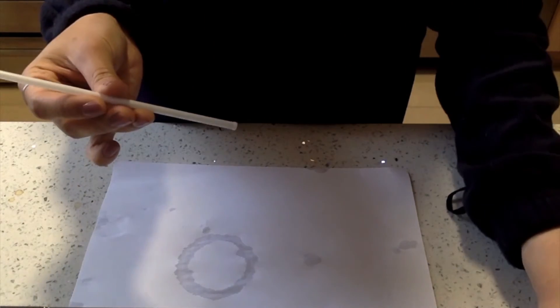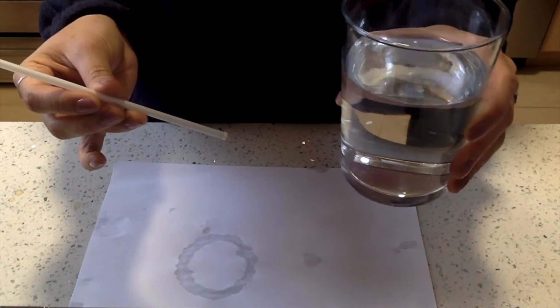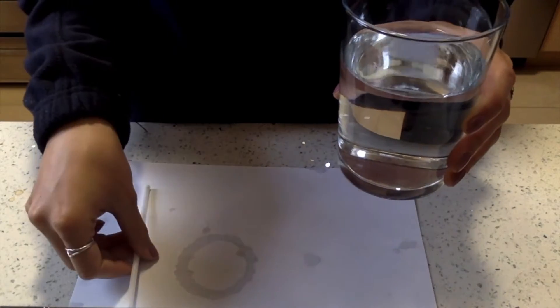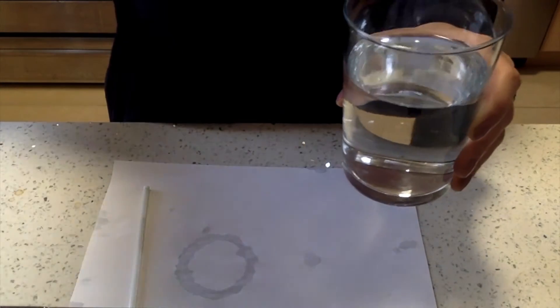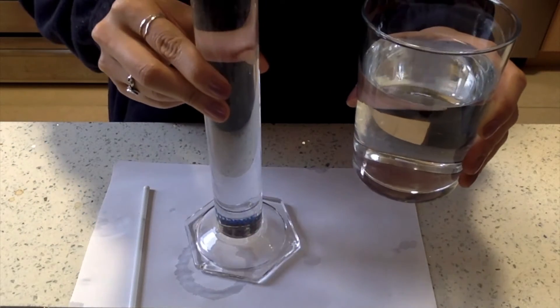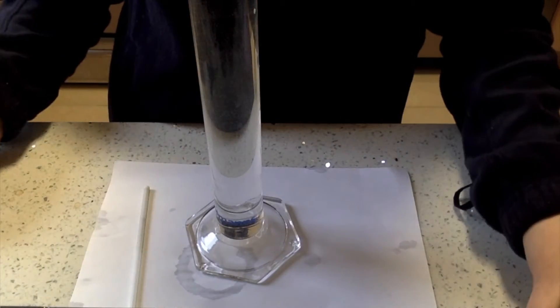Now we are ready to test our hydrometer. You can get a glass of tap water. The longer and skinnier the better so your hydrometer doesn't lean too much when you put it in the water. I'm lucky enough to have a mixing cylinder on hand, so I will be using that for today's demo.